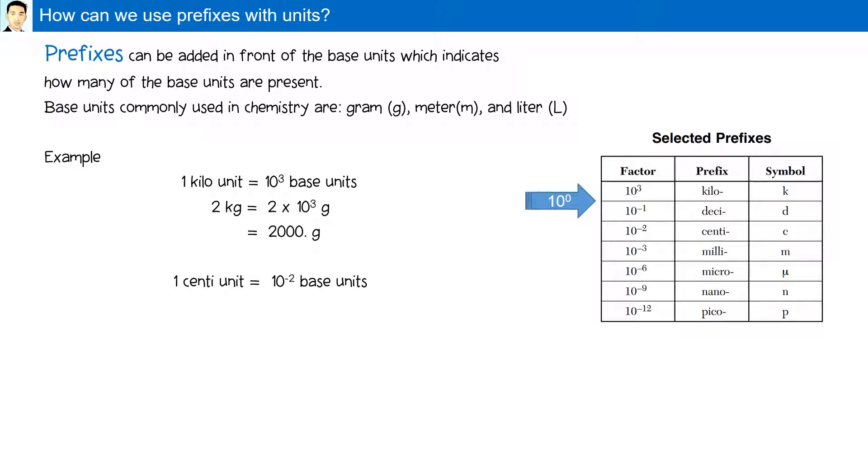One centi unit is 10 to the minus 2 of that base unit. For example, 25 centimeters is 25 times 10 to the minus 2 meters, which is 0.25 meters. Or nano, which is 10 to the minus 9. Here we have 680 nanometers, which is 680 times 10 to the minus 9 meters.